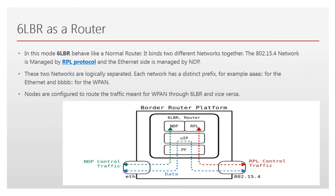When it acts as a router, it behaves like a normal router — it separates two different subnets logically, and that's exactly what it does. We have an RPL-based network on one side and an Ethernet or Wi-Fi network on the other side. They don't share the same IP address — the prefix is always different. Traffic that is meant for the Ethernet side is forwarded via the 6LBR. Similarly, traffic meant for the Wireless Personal Area Network side is also forwarded via the 6LBR.